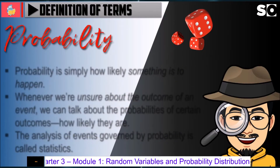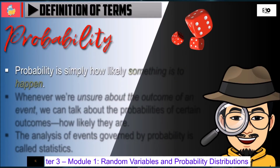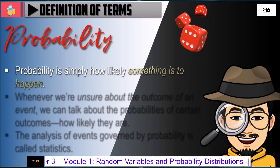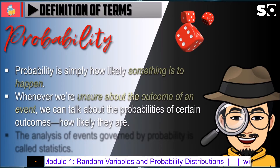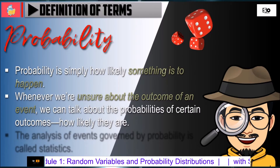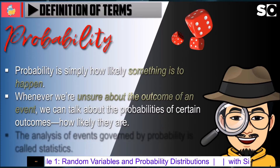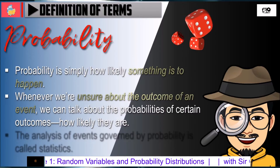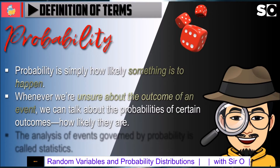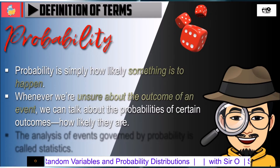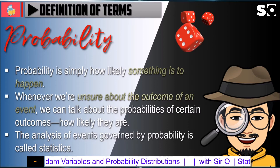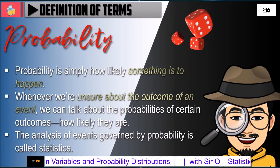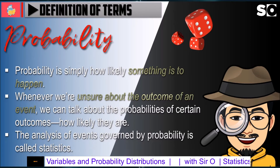Probability is simply how likely something is to happen. Whenever we're unsure about the outcomes of an event, we can talk about the probabilities of certain outcomes and how likely they are. The analysis of an event governed by probability is called statistics.